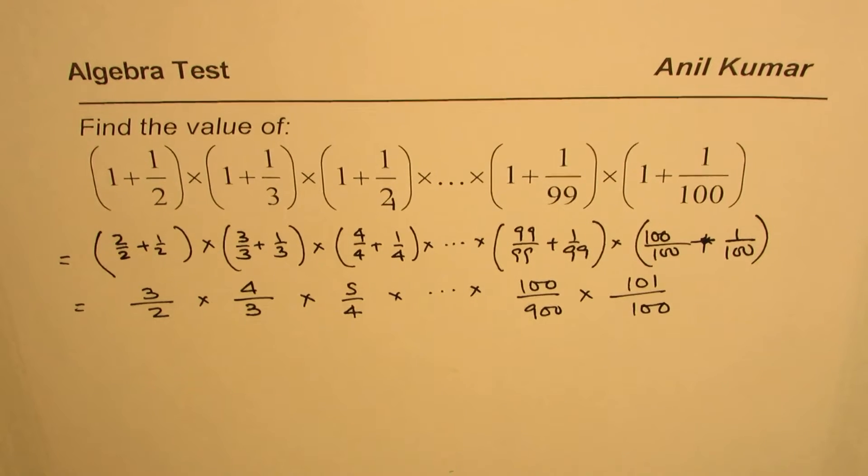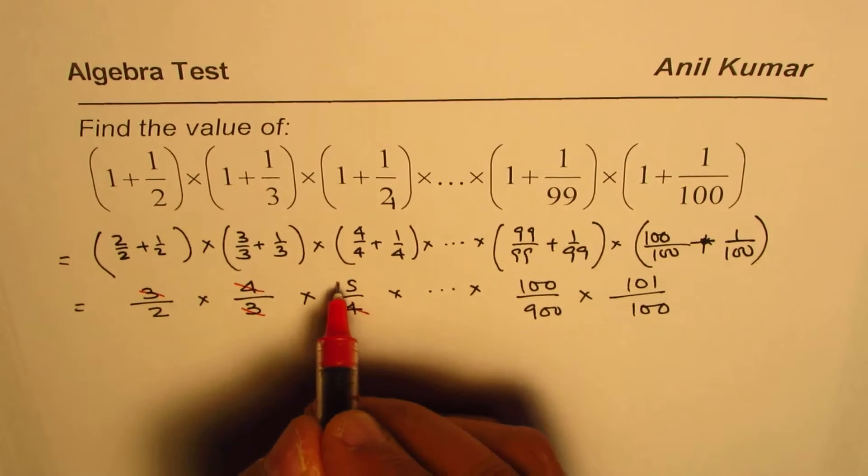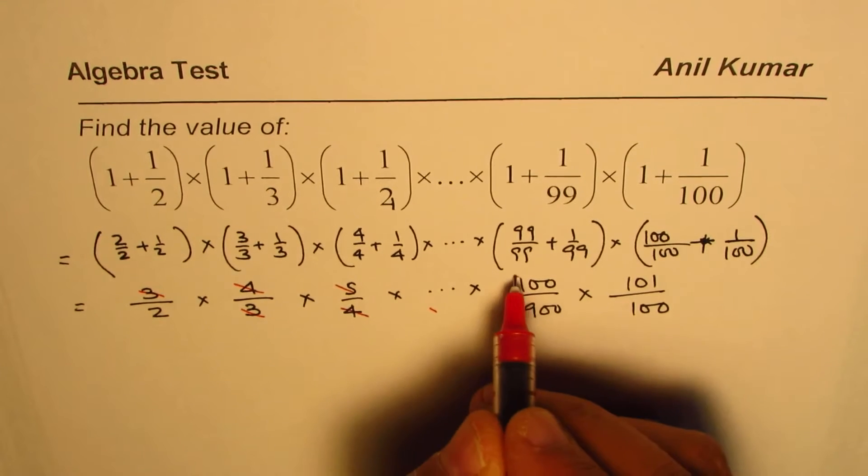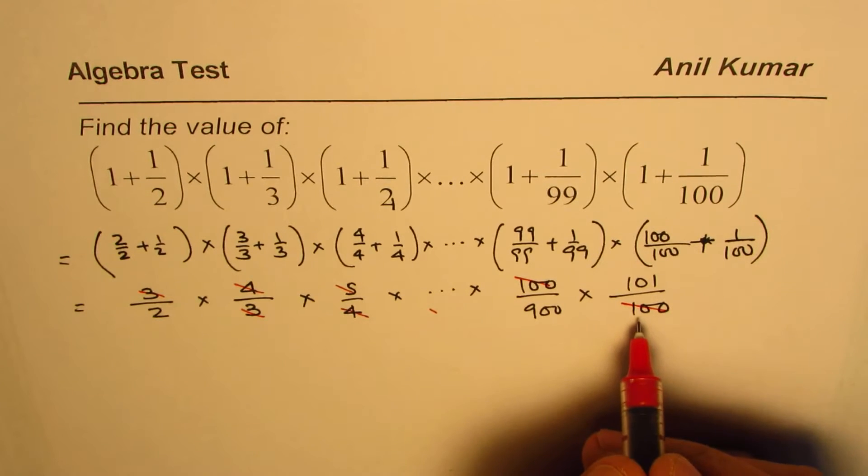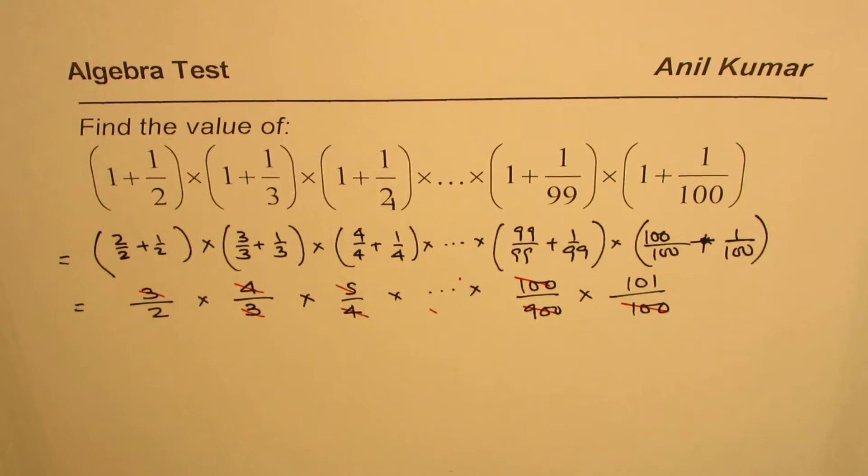Well, three divided by three is one, four divided by four is one. So all these terms will actually cancel, right? Like this, perfect. One hundred will get canceled from a term here.